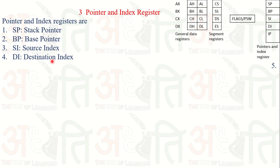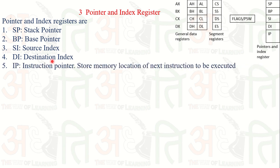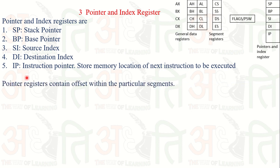SI stands for Source Index and DI stands for Destination Index. The Instruction Pointer IP stores the memory location of the next instruction to be executed — it functions as the program counter. So the IP holds the address of the next instruction that is about to be executed.